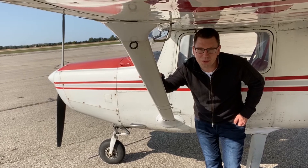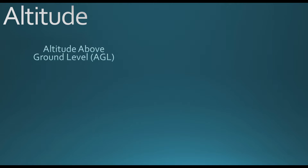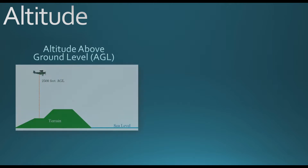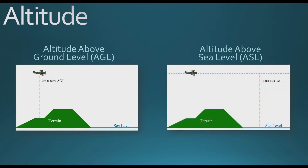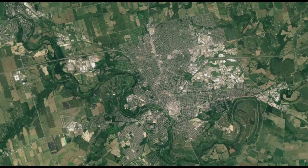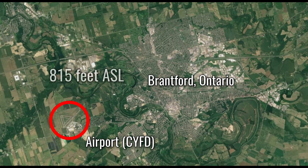The word altitude simply refers to the height of an object. In aviation, two types of altitude are commonly used. First, we have altitude above ground level, or AGL, which is the aircraft's height above the ground at its current location. Second, we have altitude above sea level, or ASL, which describes the plane's height in reference to the average level of the earth's bodies of water. Different geographic locations have different elevations with respect to sea level.